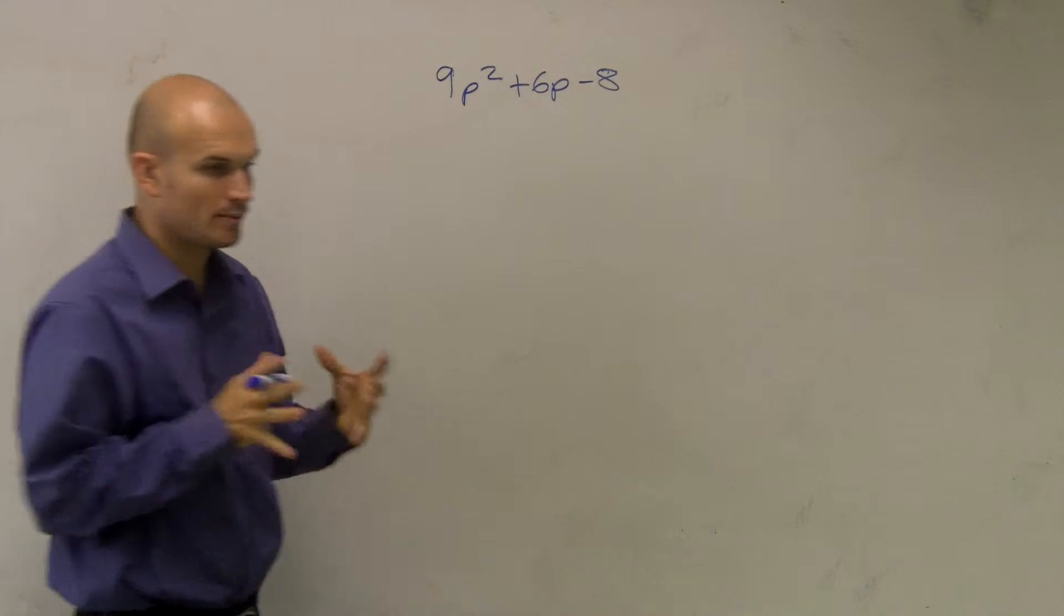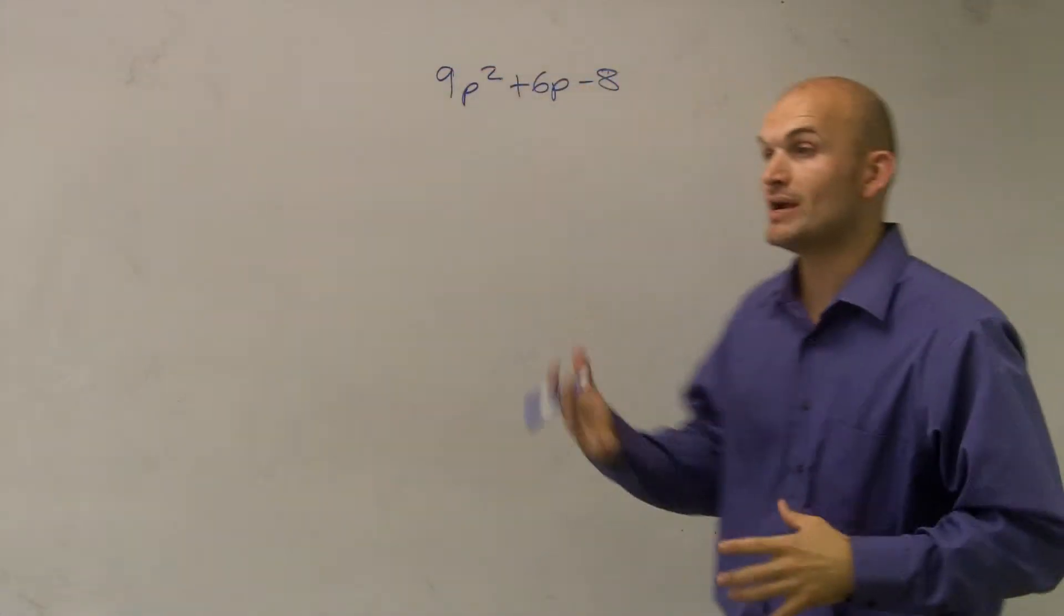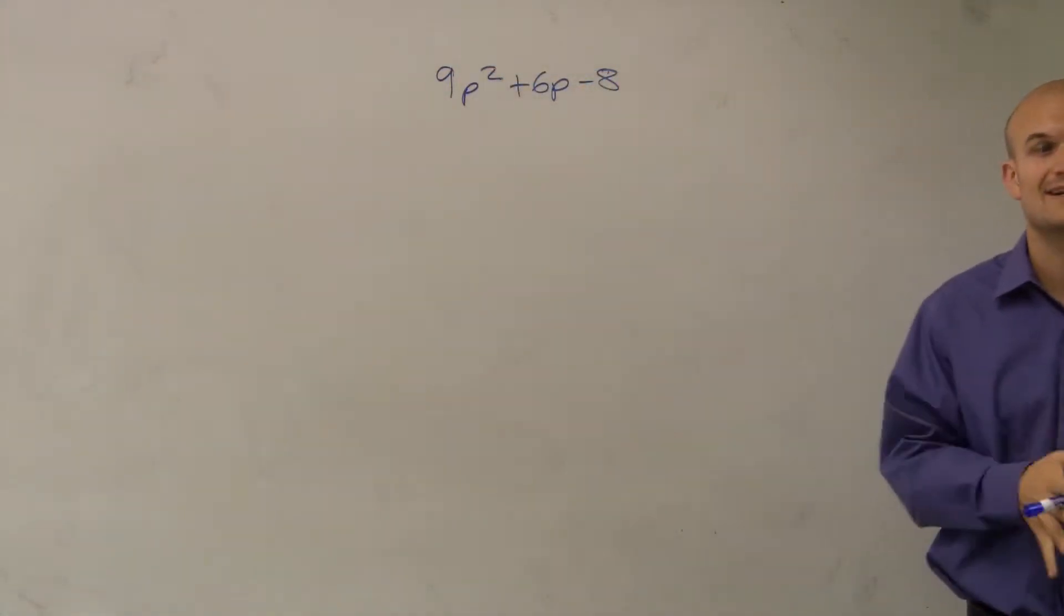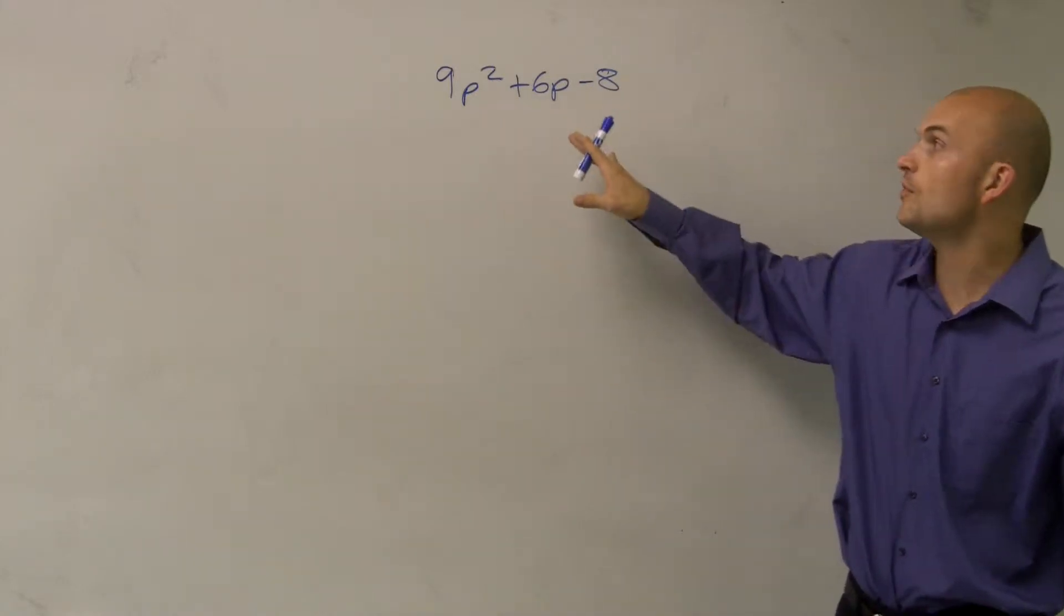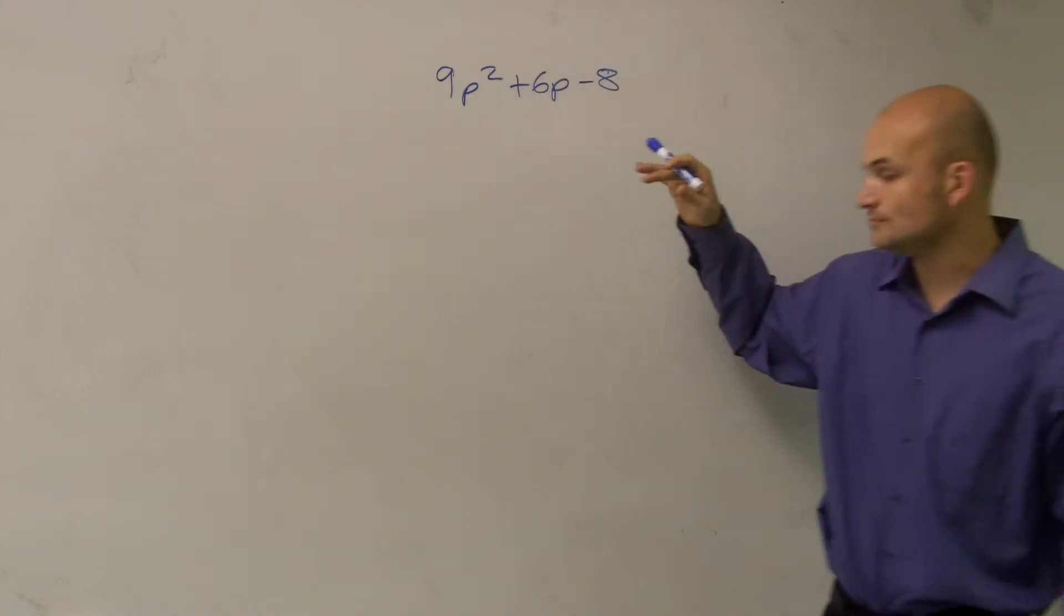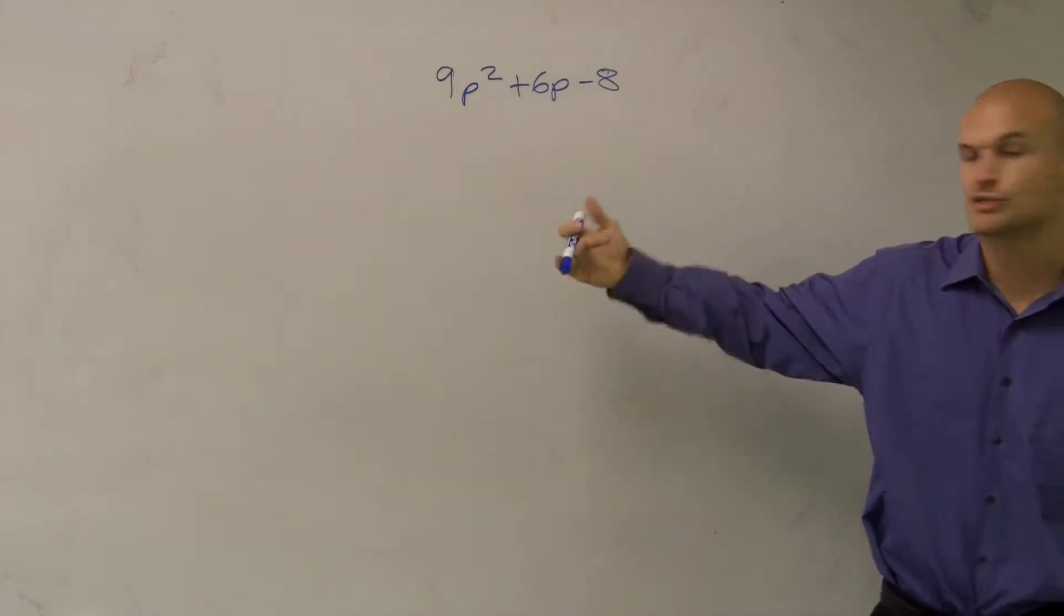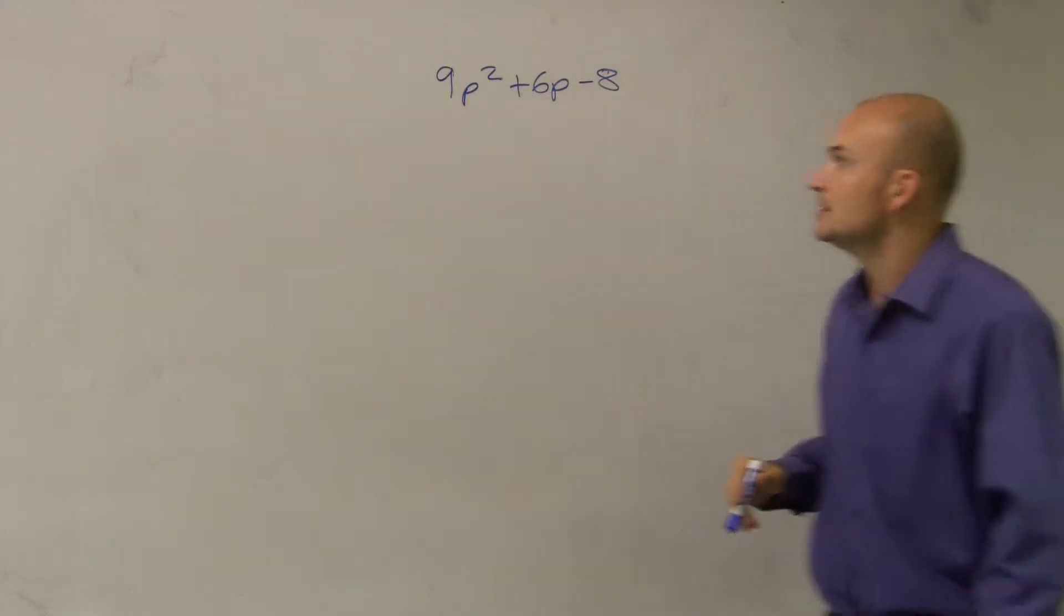The main important thing we need to do, remember when we're factoring, we're taking our expression and we're writing it as the product of two factors. Now since we have this trinomial here and it's in a quadratic form, we can use a couple of techniques that I'm going to show you to help you factor this.